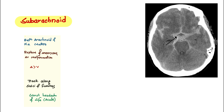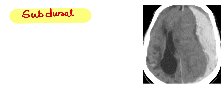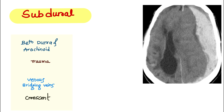Subarachnoid hemorrhage is caused by rupture of an aneurysm or AV malformation. Subdural hemorrhage occurs between the dura mater and the arachnoid space. It is caused by trauma, and the bleeding source is venous — specifically the bridging veins. The shape is crescent-shaped, and the presentation includes a history of worsening headache.